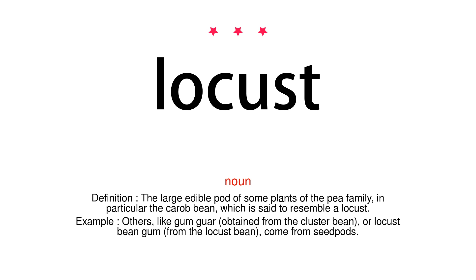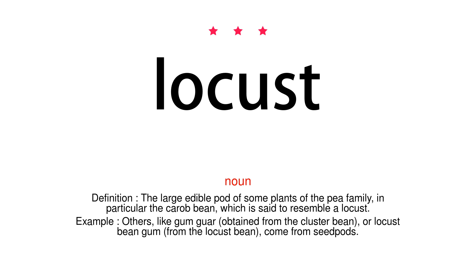Noun. Definition: The large edible pod of some plants of the pea family, in particular the carob bean, which is said to resemble a locust. Example: Others, like gum guar, obtained from the cluster bean, or locust bean gum, from the locust bean, come from seed pods.